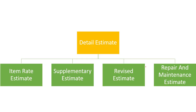Hello, in this tutorial we are going to talk about Detail Estimate. There are four types of Detail Estimate: Item Rate Estimate, Supplementary Estimate, Revised Estimate, and Repair and Maintenance Estimate. Let's look at all of these estimates one by one.